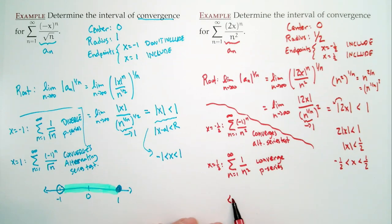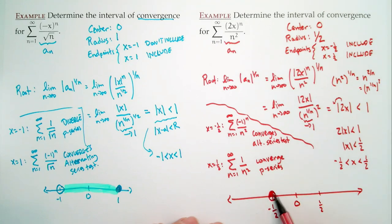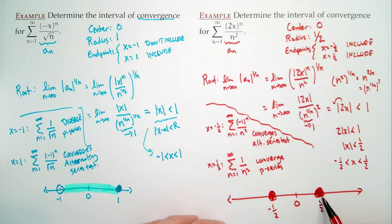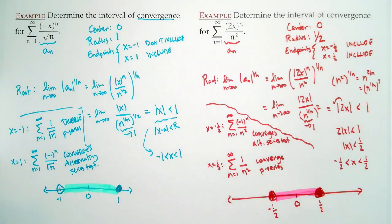This is a case where we include both endpoints. It's possible to include both, possible to include one, or possible to include neither — that's why you have to do the work. In terms of the picture, we're starting at 0, go out to 1/2 and negative 1/2, and we include both endpoints with closed circles. Our interval of convergence is negative 1/2 ≤ x ≤ 1/2. We're getting the hang of this.